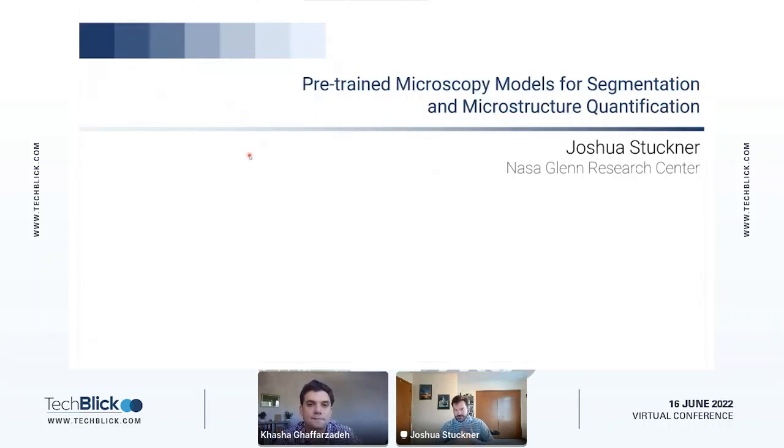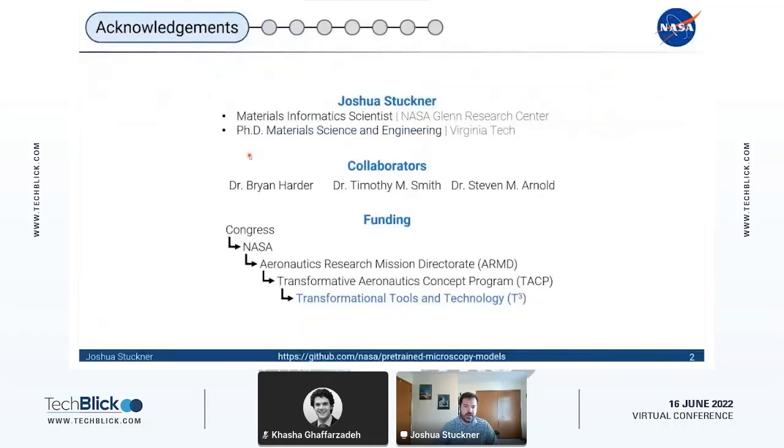All right, great. Thank you very much. I appreciate you allowing me to present here. So today I'm going to talk about how we pre-trained neural network encoders to improve the segmentation accuracy of microscopy images for microstructure quantification. This work is funded by Transformational Tools and Technology at NASA. Here are my collaborators. All the code and models are available here so you can check that out.